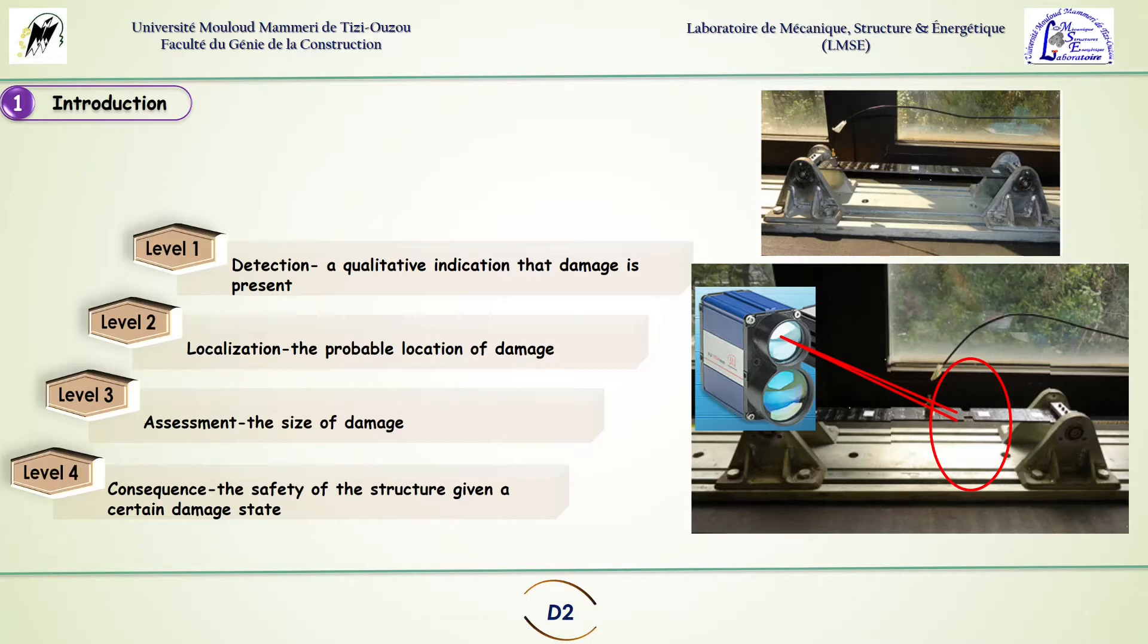The next level is to know the size of the damage and its location in order to finally reach an understanding of what is the global health of the structure and when the crack or the damages can reach a critical size. If we know that information we will be able to change the mechanical piece before it's destroyed.